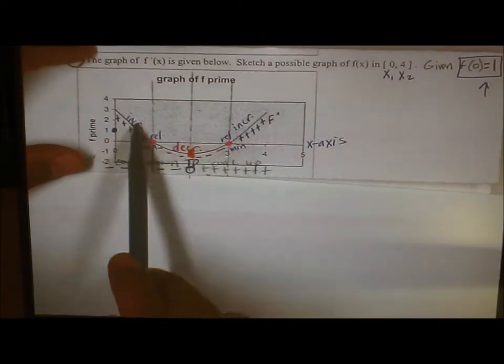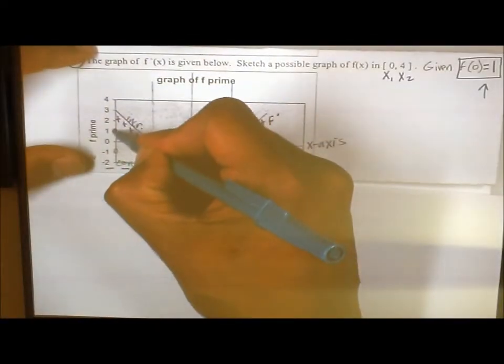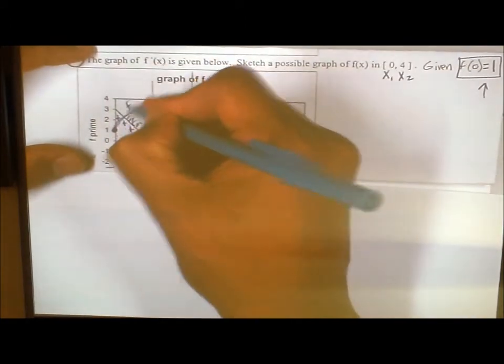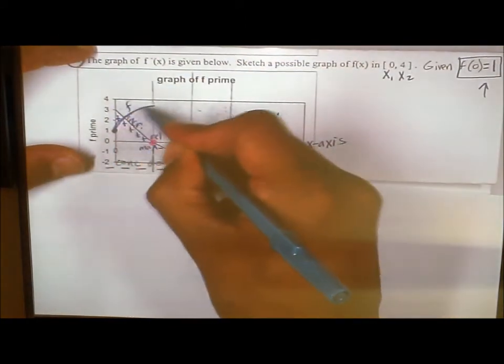Like, for example, you know you're going to start off increasing and concave down, something like this. Again, you don't know the magnitude of your increase. You just know that you're increasing and concave down. You just know the shape.